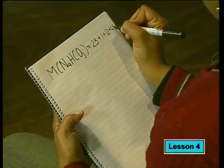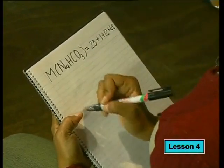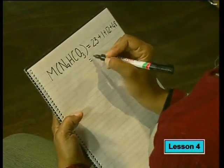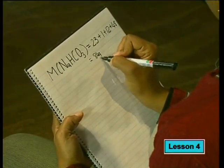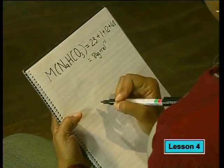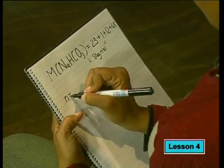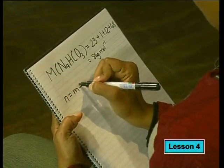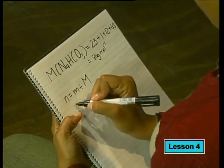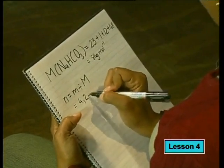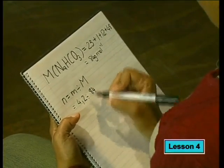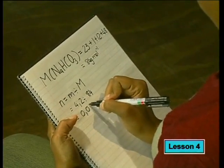2 moles of sodium bicarbonate will react to form 1 mole of each of the products. But we did not start with 2 moles of sodium hydrogen carbonate — we started with 4.2 grams. So the next step in my calculation was to find the number of moles present at the start. I found that the molar mass of sodium bicarbonate is 84 grams per mole. Then I used the relationship between number of moles and mass and substituted the values into the equation. This shows that 4.2 grams of sodium bicarbonate is exactly 0.05 moles.